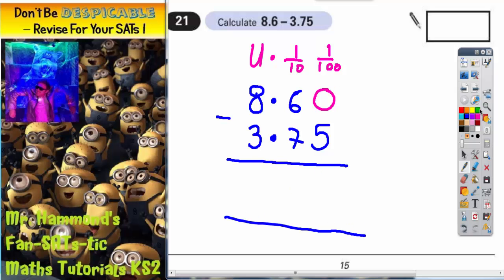You always start at the end column. So we've got 0 subtract 5, you can't do. So you need to borrow one from the 6. Go to the next column, which is a 6. Cross it out. And because we're borrowing one, that now becomes 5. And the one we borrowed turns this 0 into 10. So now we can do it. 10 take away 5 is 5.